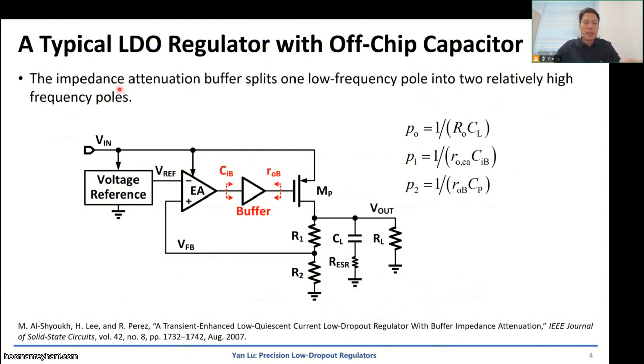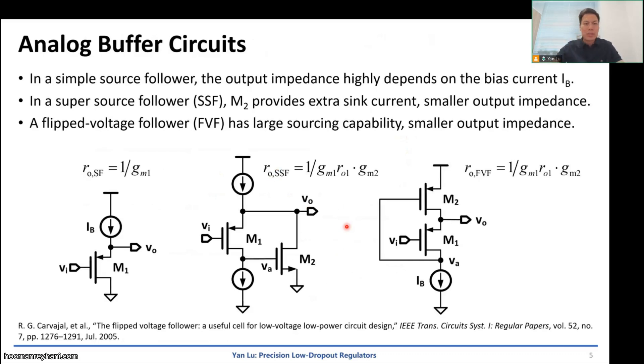So here shows a typical example of LDO regulators. We can have an impedance attenuation buffer to split low frequency pole into two relatively high frequency poles. Because the buffer will provide us a small input capacitance and low output resistance. So basically, we split low frequency gate pole into two high frequency poles. The first one related to the output impedance of the error amplifier and input capacitance of the buffer. The gate pole will be related to the output resistance of the buffer and the gate capacitance. So these two poles will be high frequency and the dominant pole can be set at output by using the large off-chip capacitor.